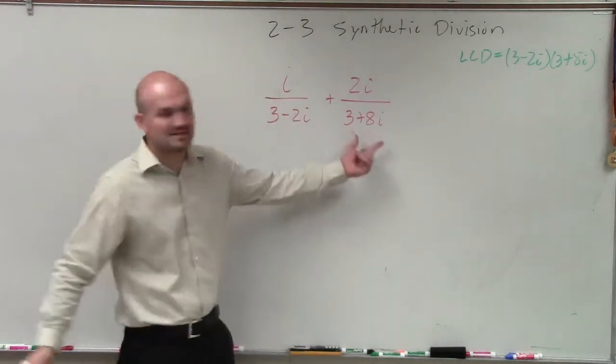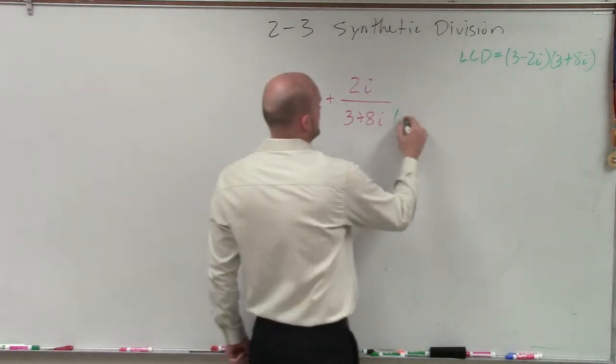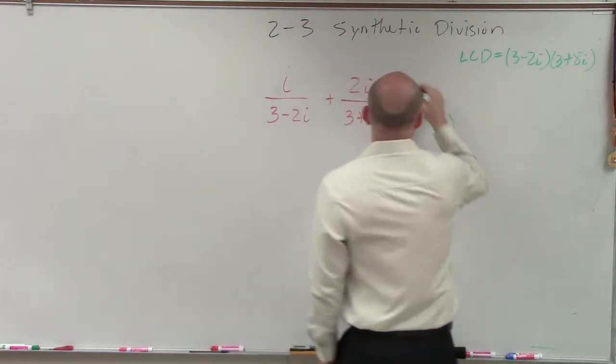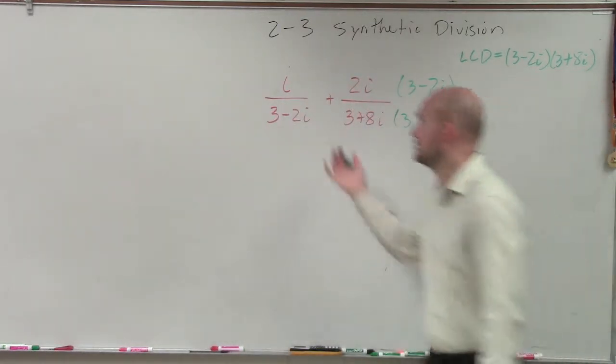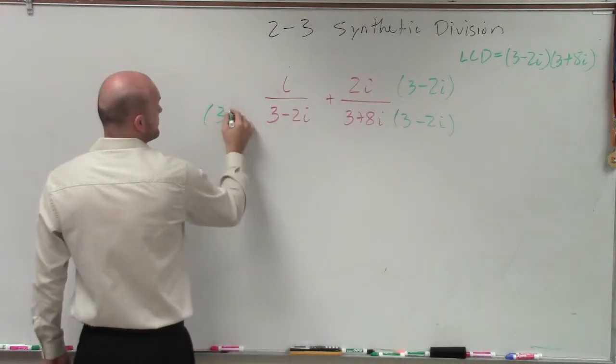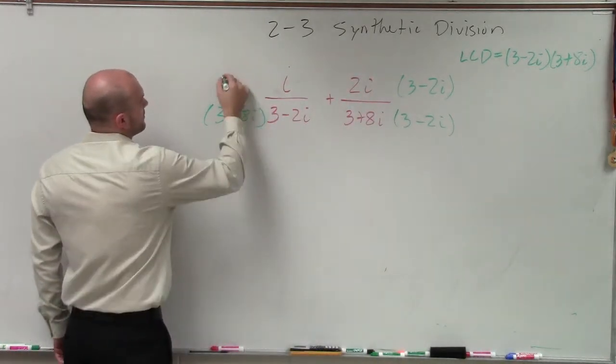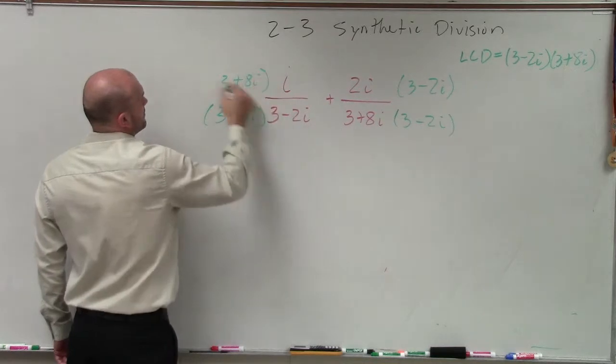So to get 3 plus 8i to my least common denominator, I need to multiply by 3 minus 2i. To produce equivalent fractions, I need to make sure I multiply on the top and the bottom. Over here, I have to multiply by 3 plus 8i.